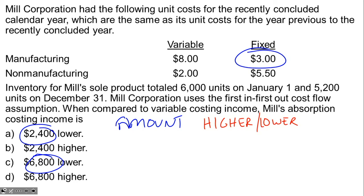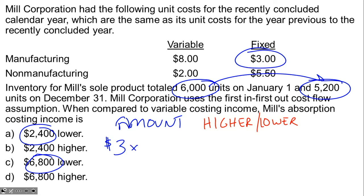The amount is very simple. It's the $3 fixed manufacturing cost per unit, and we know inventory changed by 800 units — from 6,000 units on January 1st to 5,200 units on December 31st, with the same costs for both years. So we take that $3 per unit, multiply it by the 800-unit change in inventory, and we get an amount of $2,400.